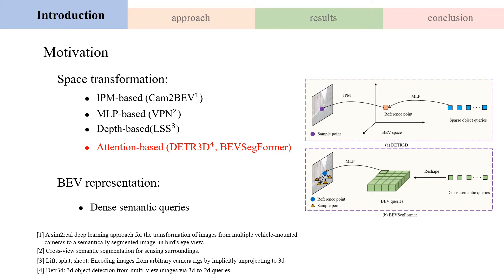Motivation of this work: Space transformation is the basis of BEV segmentation. There have been many works using different ways to transform image space features into BEV space, for example, IPM-based, MLP-based, depth-based, and attention-based.